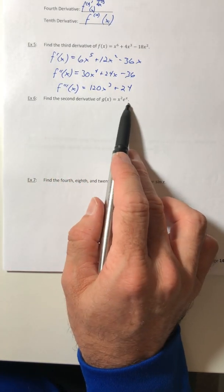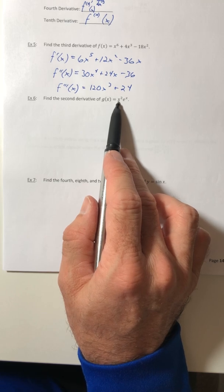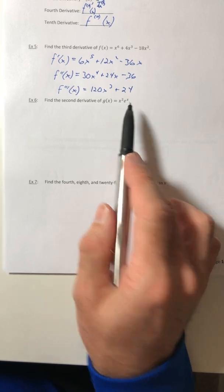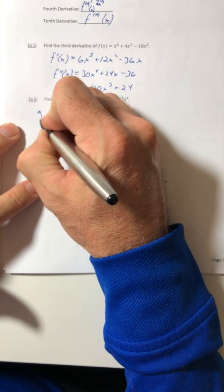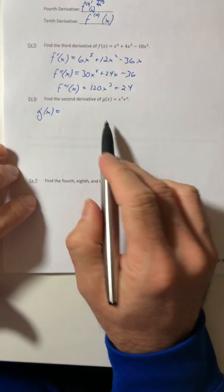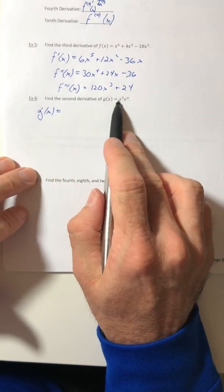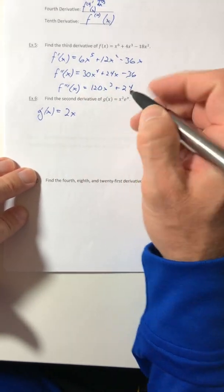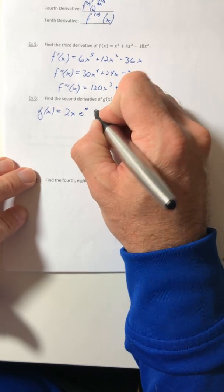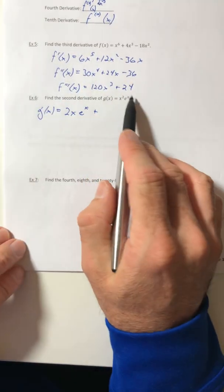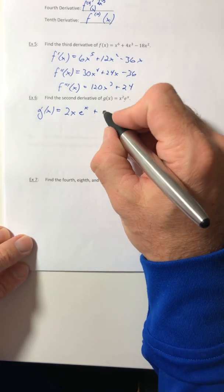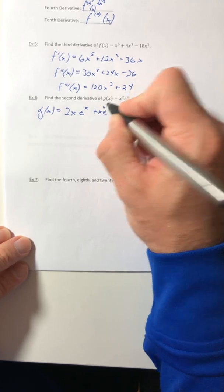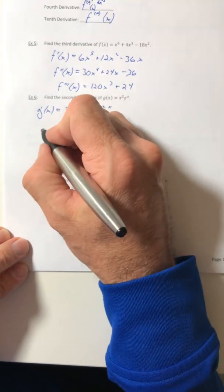Example six. Find the second derivative of this. This is going to need the product rule because I have a product. So I've got to use the product rule to give me the first derivative. So the derivative of the x squared. 2x times the e^x. And then plus. I'll switch it. So the derivative of the back term. e^x. Times x². And I'll just write that in front of it. So there's my first derivative.